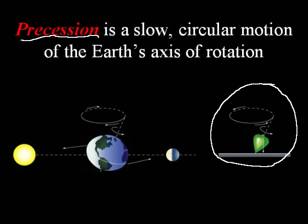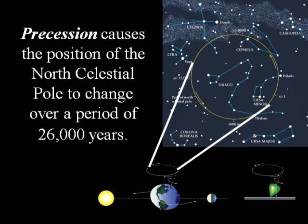Notice the child's top — you've probably seen a top before. It does not spin perfectly true; that axis wobbles a tad. And so the moon and sun pulling on the Earth causes the north celestial pole to point to different spots in space. The Earth slightly wobbles, and we get a precession effect.